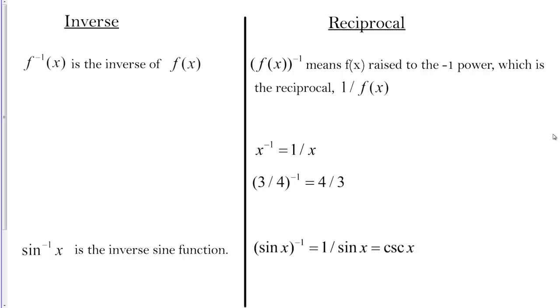Let's start with this first point here. F to the negative one of X is the notation used to represent the inverse function of F of X. This is just the convention. If you see the negative one power up there right after the F, F negative one of X, that always just represents the inverse function of X.